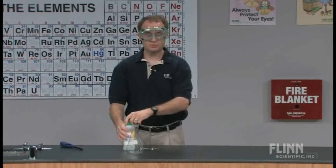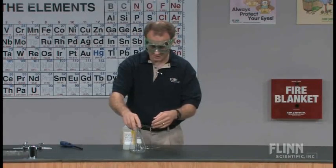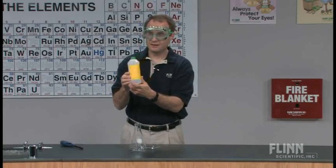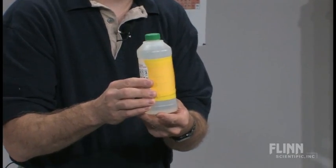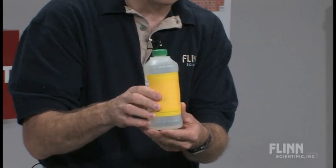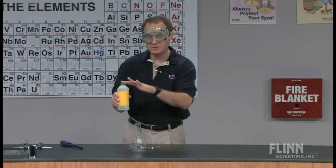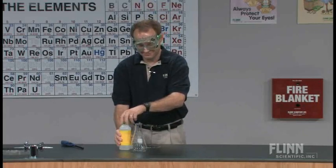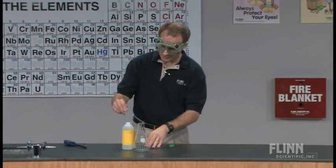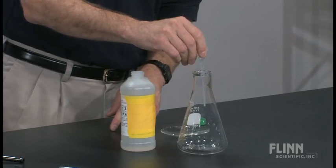Before the students would arrive, I would take an empty Erlenmeyer flask such as this. I'll take a mystery chemical such as this — it's a mystery to them, and I've tried to cover anything that would give them an advantage in terms of knowing what it is. Obviously a teacher should know what it is. What we do is add one full squirt of this chemical into the bottom.